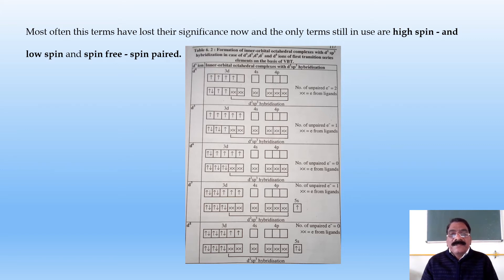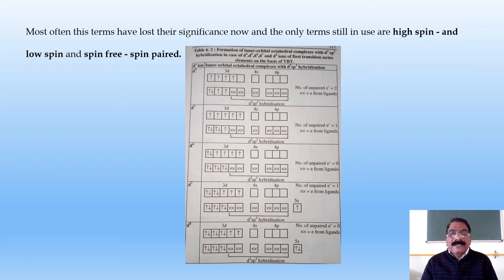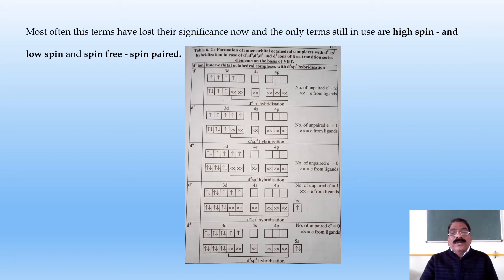For the d6 system with d²sp³ hybridization, there are four unpaired electrons in the ground state, but two unpaired electrons get paired so all electrons become paired. For d7, one electron is shifted into the 3d orbital and one into the 4s orbital, making two d orbitals empty, giving d²sp³ hybridization. For the d8 system, there are two unpaired electrons in the ground state, but these two orbitals must be empty; they are excited and shifted into the 4s orbital, giving d²sp³ hybridization with no unpaired electrons.